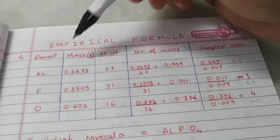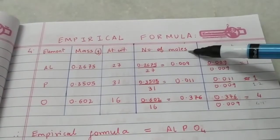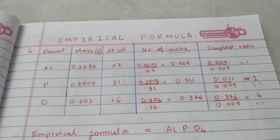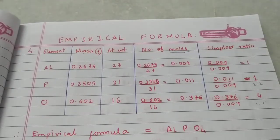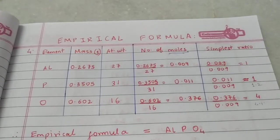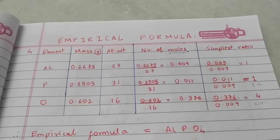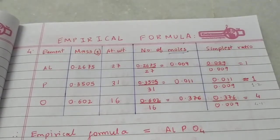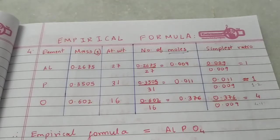What is the meaning of moles? It's just a unit of quantity — like when I say one dozen means 12 objects, one mole of anything means a fixed number, which is Avogadro's number: 6.023 × 10²³. It's used in chemistry to count atoms, molecules, or ions. But that Avogadro's concept is not required for these empirical formula sums — just know that the formula here is mass divided by atomic weight.